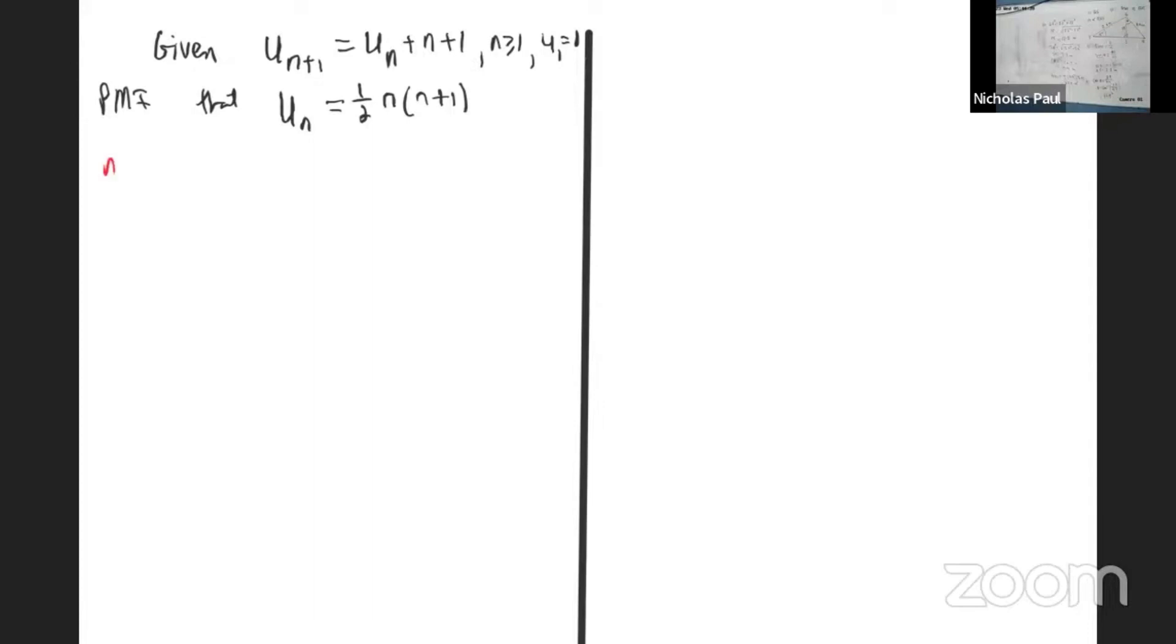So first thing first, when n is one, you want to prove that it holds for n equals one. So remember I'm using this here, but what I'm trying to prove is that U₁ equals one. So U₁ is a half by one by one plus one, which is a half by two, which is one.